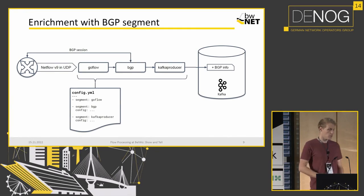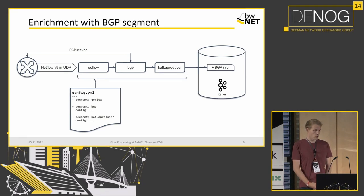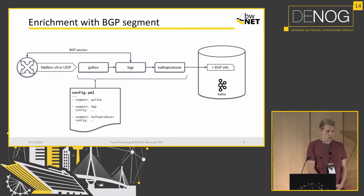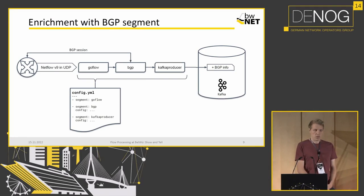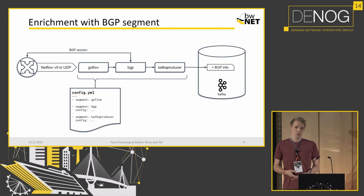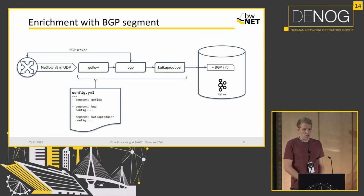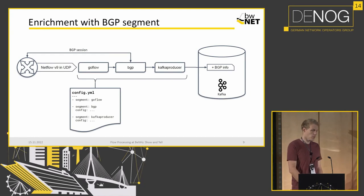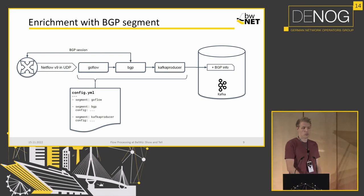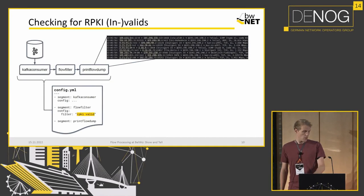Going into the BGP segment: we have a router exporting NetFlow again, and we use the GoFlow segment to receive it. We add a BGP segment that opens a BGP session with the router that's exporting. If there are multiple exporting routers, it will have multiple BGP sessions, so we can get routing info from any of them. It's most convenient to check the sampler address that's part of every flow and use the associated BGP session to get that data. We again have a Kafka producer to dump all flows with BGP info into a Kafka topic.